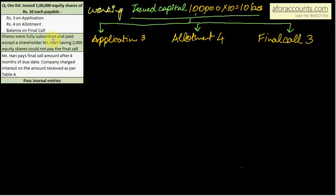Shares were fully subscribed and paid, except a shareholder Mr. Hari having 2,000 equity shares could not pay the final call. Who bhi ja ke aryar kaan kiya hai sida final call mein. Means application or allotment ke entries smooth nikal jayengi.